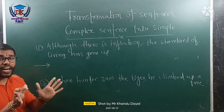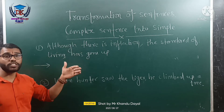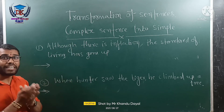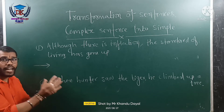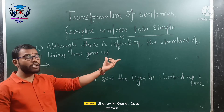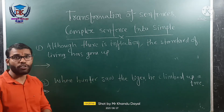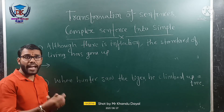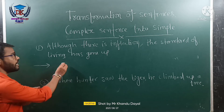There is a rule when we are transforming a complex sentence into a simple sentence. We are supposed to retain or keep one principal clause as it is, and we are supposed to cut short the subordinate clause into a word or phrase by using infinitives or the -ing participle. So let us see with the help of an example.